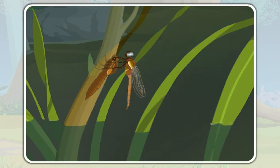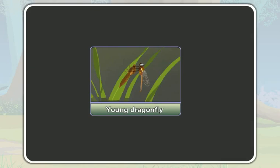Then it moulds for the final time. After moulting for the final time, it remains no more a nymph — it turns into a young dragonfly. This young dragonfly grows up to become an adult dragonfly.